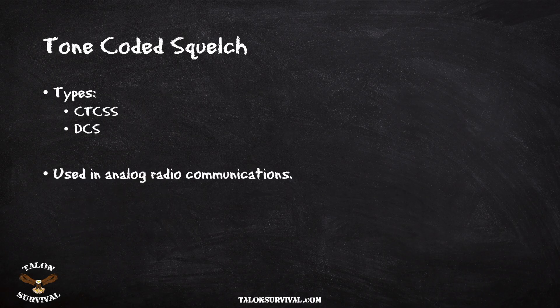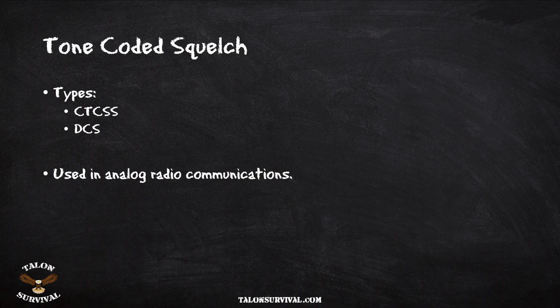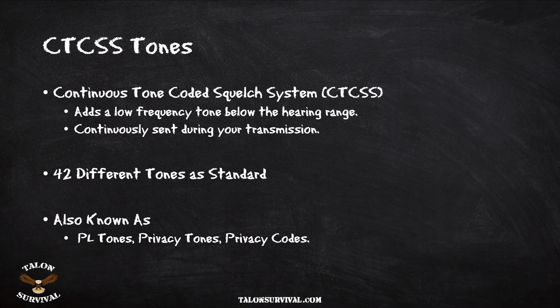There are two types: CTCSS and DCS. Both of these are used in analog radio communications — we'll touch on digital radio communications lightly a bit later. But when you hear the terms DCS and CTCSS, they are talking about analog radio communications. So what does CTCSS stand for? CTCSS stands for Continuous Tone-Coded Squelch System.